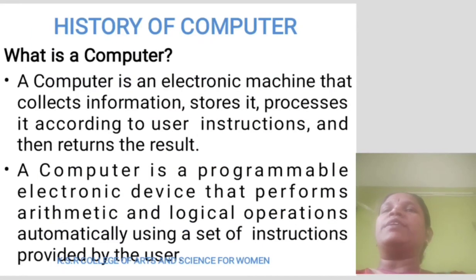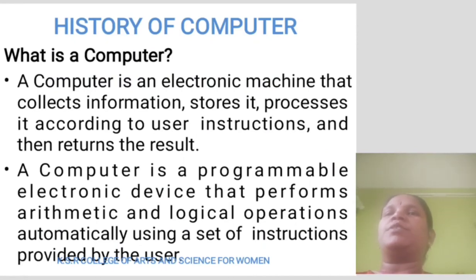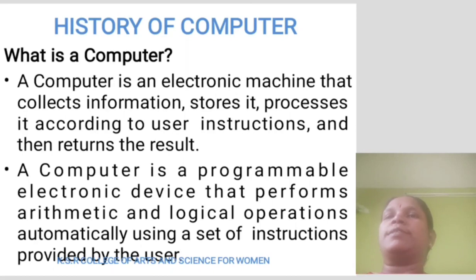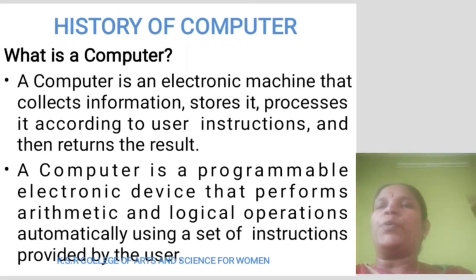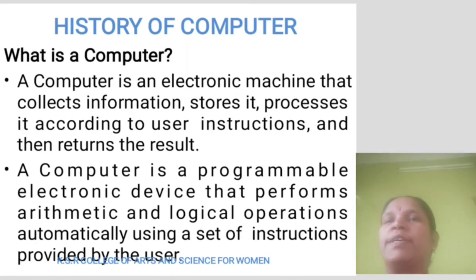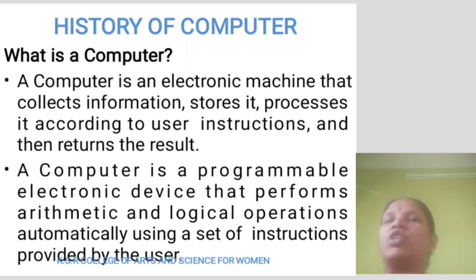First of all, the History of Computer. What is a computer? A computer is an electronic machine that collects information, stores it, and processes it according to the user's instruction and then returns the results. A computer is a programmable electronic device that performs automatic and logical operations using a set of instructions provided by the user.